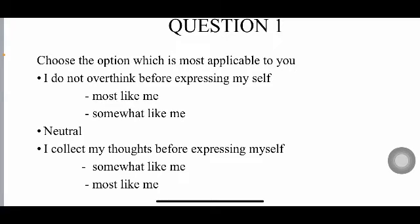For the first question, you'll be given a question like this: choose the option which is most applicable to you. On your screen you'll have a box divided into three parts. In the first part you'll be given one question, in the second part one more question, and in the third part the option 'neutral'. The first question is: 'I do not overthink before expressing myself' — meaning, before explaining anything, do you think about that particular thing multiple times?